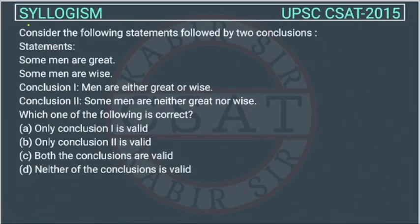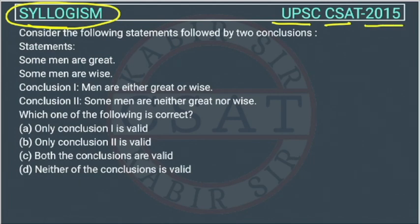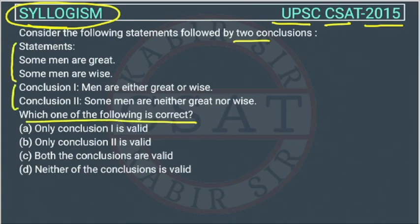This is a question on reasoning from the syllogism chapter, asked by UPSC in the CSAT paper of 2015. Consider the following statements followed by two conclusions. From these statements, we need to determine which conclusion we can draw.